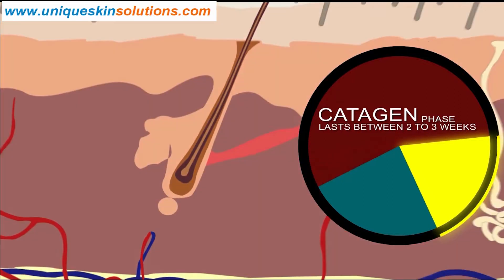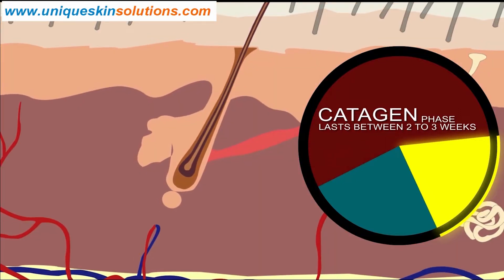Finally, hair follicles detach from their blood supply. Catagen phase lasts for 2 weeks. Up to 1% of hairs in a normal scalp are in this stage.